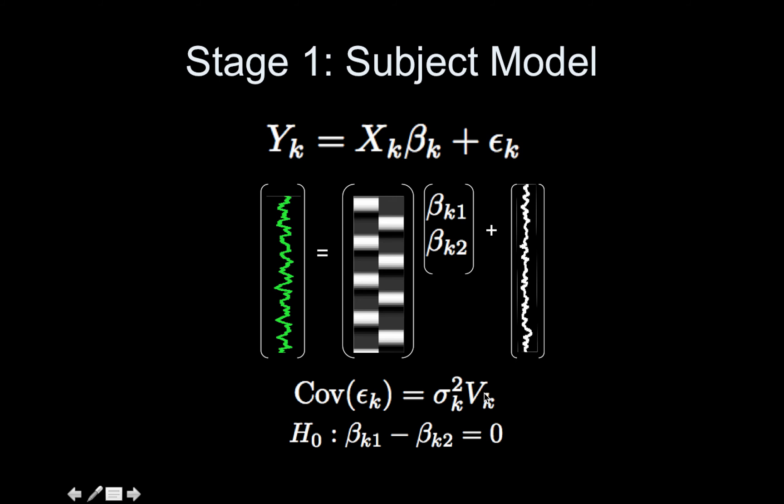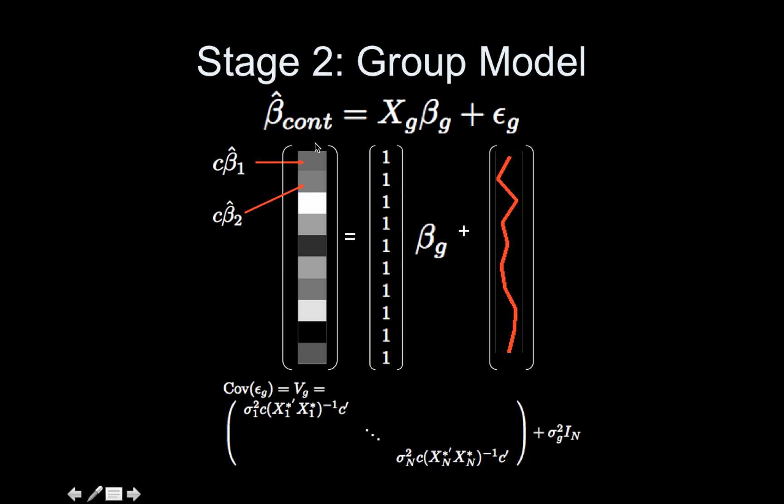That's what you get out of this: your c beta hat. Then you multiply, pre- and post-multiply that by c. At the second level we have this model. Each of these is the faces minus houses contrast for each subject, so we have about 10 subjects, and the group model's a one-sample t-test. I'm using the one-sample t-test as an example, but the modeling strategies I'm showing you today can be used with any type of model.